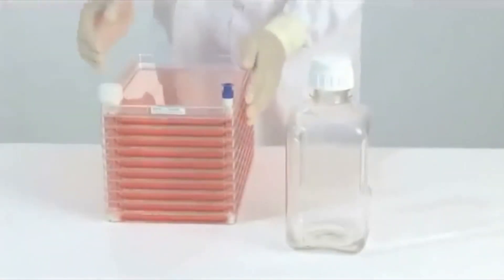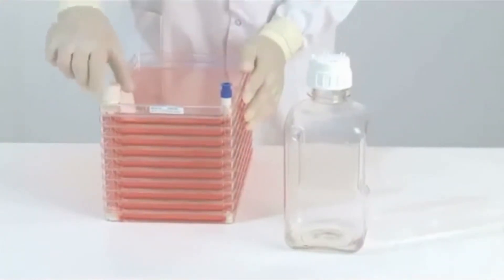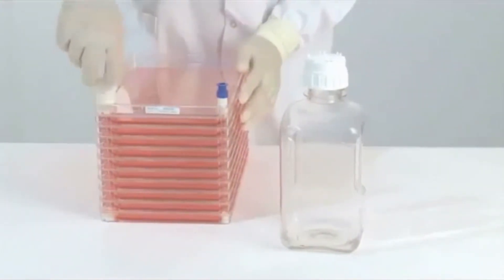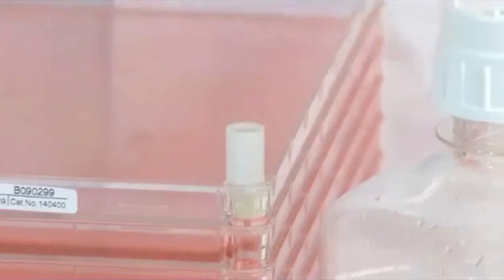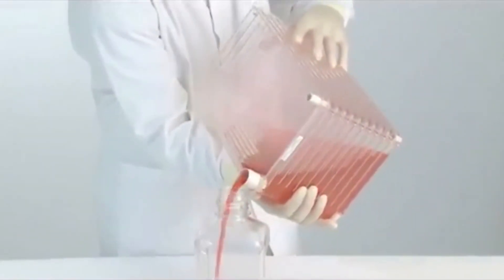To empty the EasyFill Cell Factory System through the wider port, remove both the white vent cap and the blue cover cap. Then simply pour the medium into the bottle.